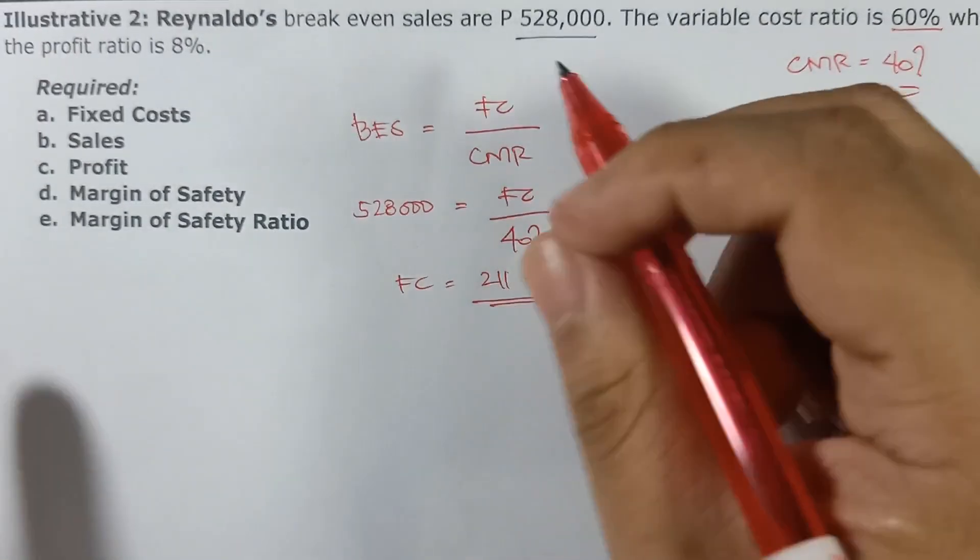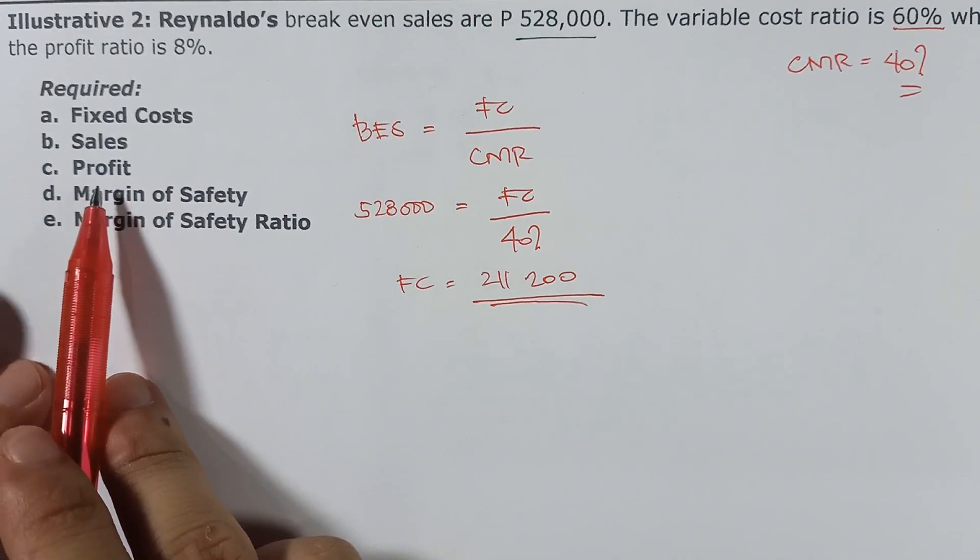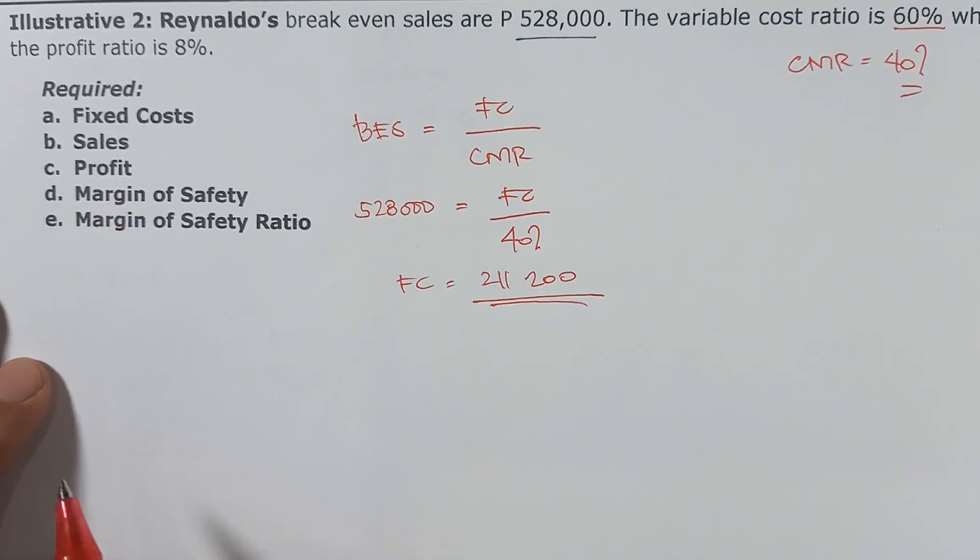So fixed cost = 528,000 × 40% = 211,200. Requirement letter A: the fixed cost is 211,200.